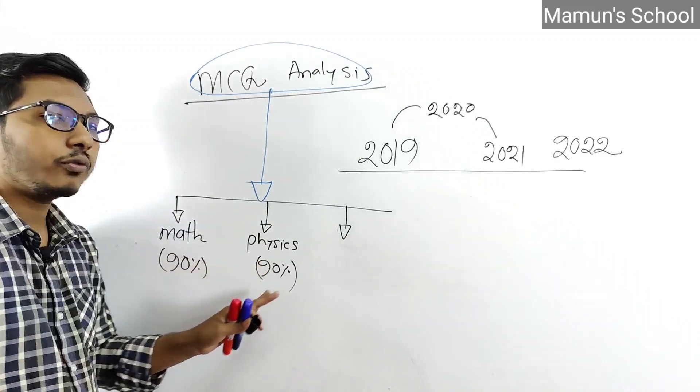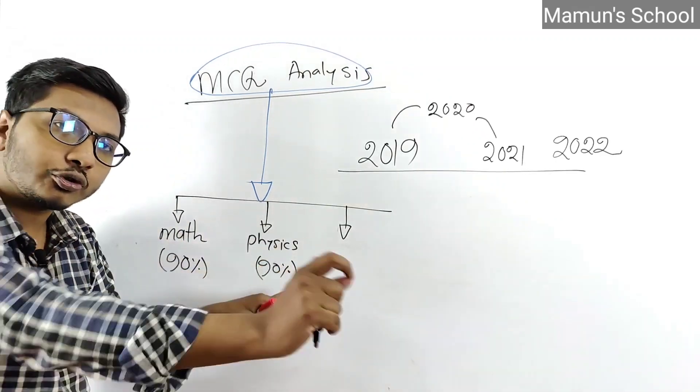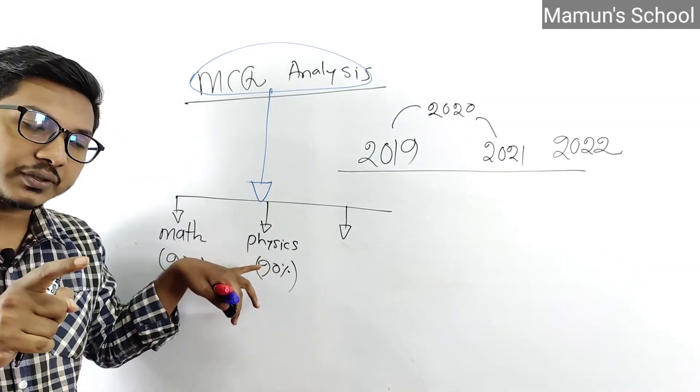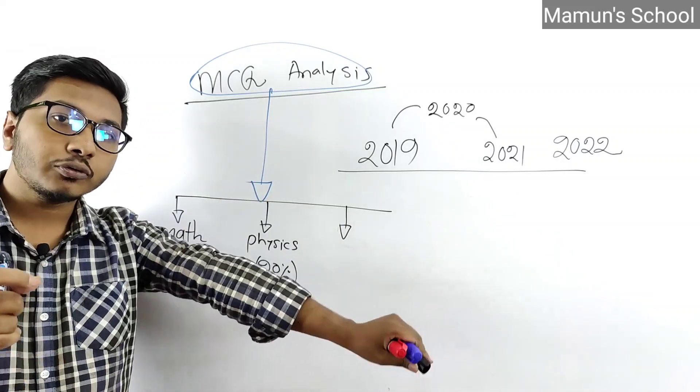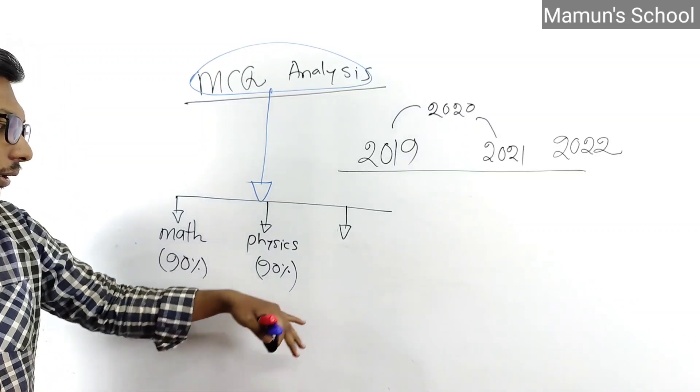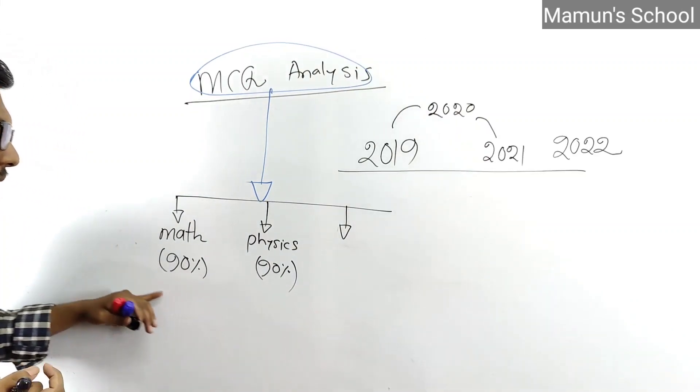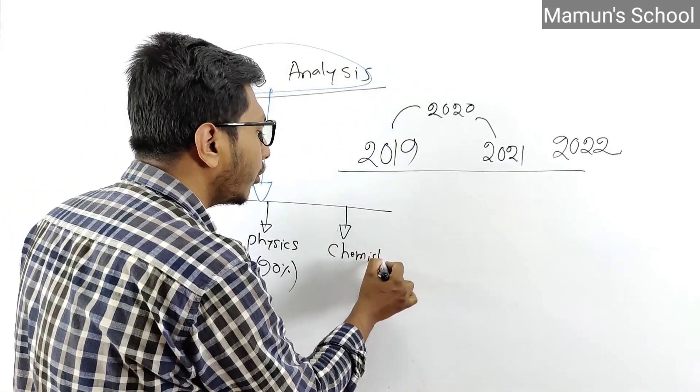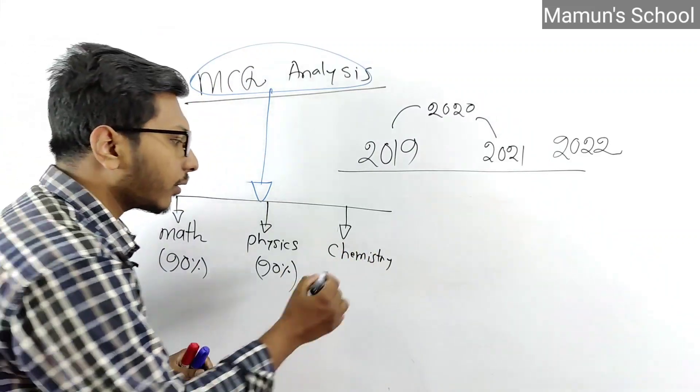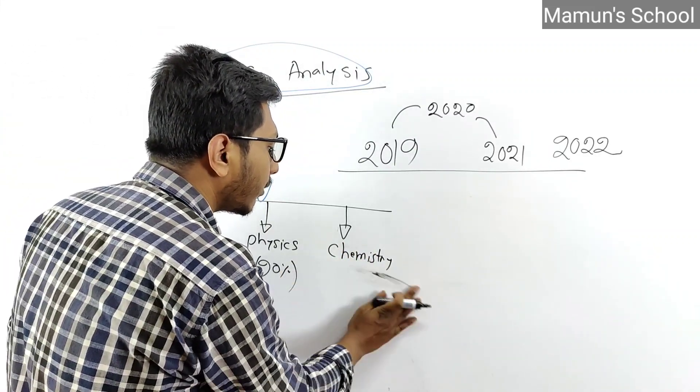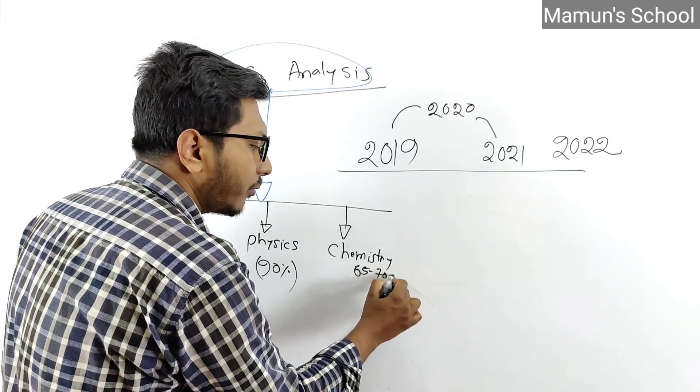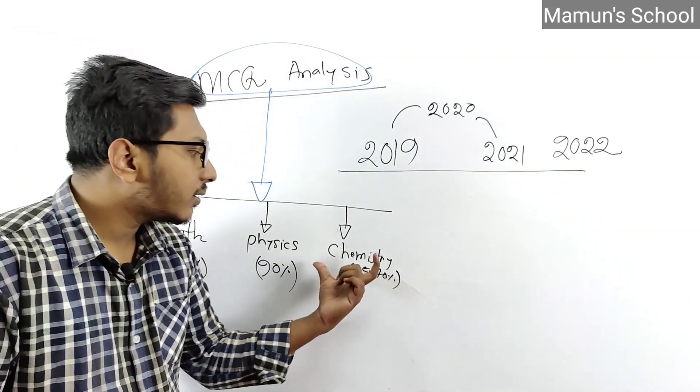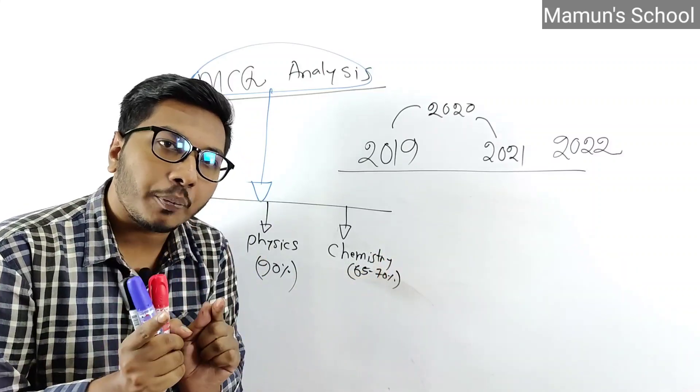In mathematics, I analyze and solve all questions topic by topic. I provide topic-wise analysis showing which topics have high importance. For chemistry MCQs, the coverage is about 50 to 65-70 percent from certain topics, while 30 percent comes from other areas. I analyze each topic to show you which topics are most important.